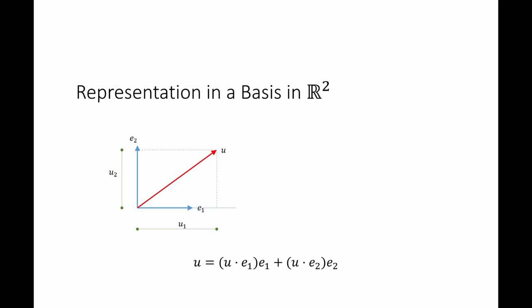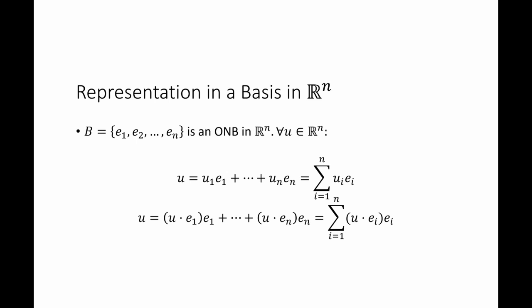So I can represent u as equal to the projection of u on e1 in the direction of e1, plus the projection of u on e2 in the direction of e2, which is u1·e1 plus u2·e2. This can be extended to any n-dimensional vector space. If I have an orthonormal basis set B with n orthonormal vectors, any vector u in the space can be written as u1·e1 plus u2·e2 and so on, which is equal to the sum from i equals 1 to n of ui·ei.